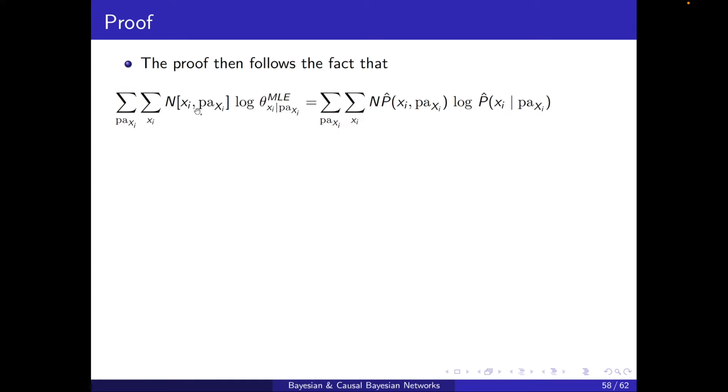because we used the empirical distribution, p hat, this is equal to exactly n times p hat of Xi and parents of Xi. If this wasn't the empirical distribution, these two wouldn't necessarily match. Now, I just add, multiply p hat in the numerator and the denominator,